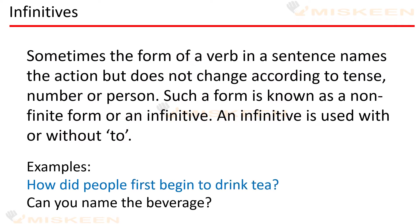Ab infinitives ka definition padhte hain: Sometimes the form of a verb in a sentence names the action but does not change according to tense, number or person. Such a form is known as a non-finite form or an infinitive. An infinitive is used with or without 'to'.